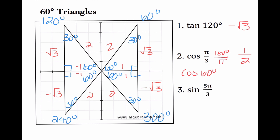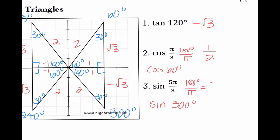Sine of 5 pi over 3 — that's five-thirds of a semicircle, or 1 and two-thirds. If I multiply by 180 over pi, I get sine of 300 degrees. So I'm going off of this triangle right here, because I know that's in quadrant 4. I'm going off of 60 degrees. So our sine would be negative radical 3 over 2.